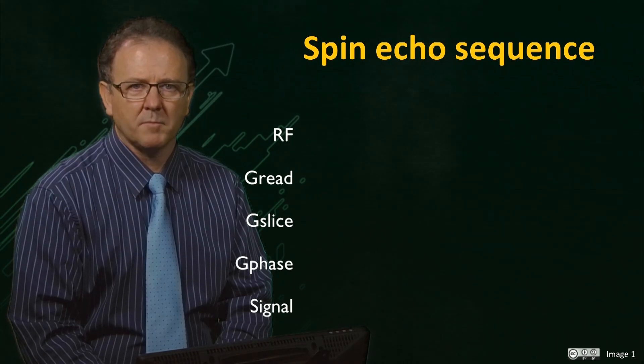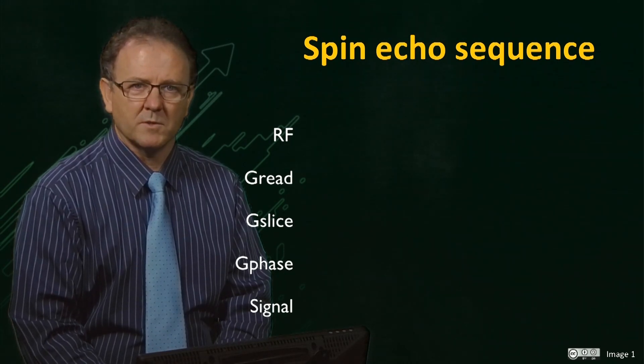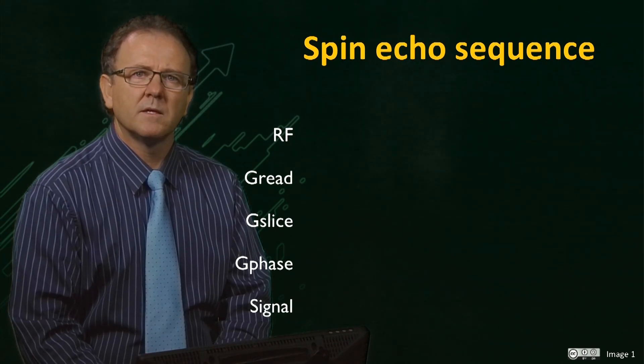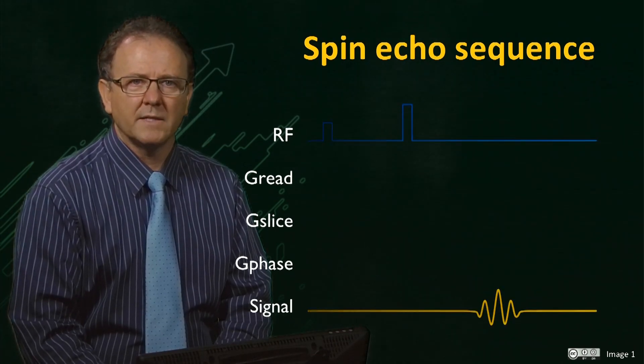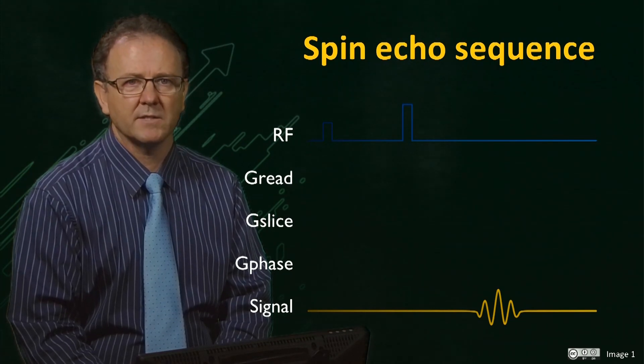So how do we build a spin echo pulse sequence that generates an MR image? We start with the spin echo that we have seen before. The 90 tau 180 tau RF sequence generates a spin echo at time 2 tau.